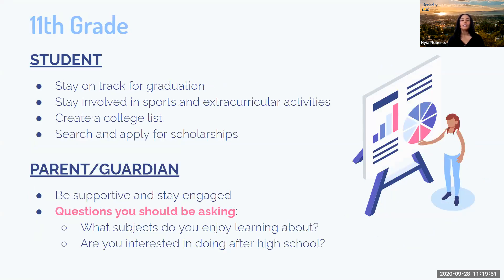In 11th grade, we want students to stay on track for graduation — maintaining C's or better in all courses and taking A through G eligible classes. It's also important that, if possible, students begin challenging themselves by taking AP and honors classes, as this will help them stay competitively eligible for colleges and universities. We want students to stay involved in sports and extracurricular activities to continue building their college resume. We want them to create a college list — begin thinking about schools based on location or major — and start searching and applying for scholarships.